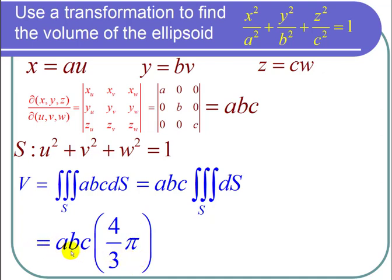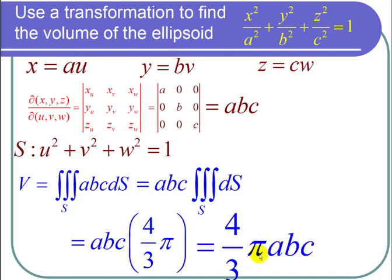So the volume is a, b, c times 4 thirds pi. So we can conclude that the volume of the ellipsoid is 4 thirds pi times a, b, c. And I'm done with the problem.